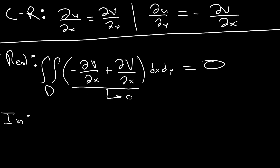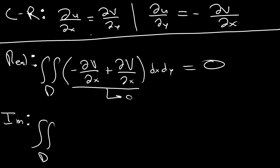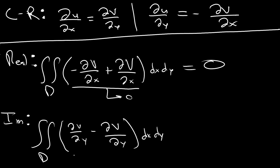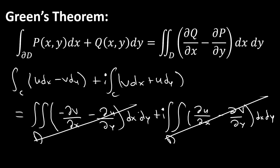How about the imaginary part? Again we take the double integral over our domain. We can see we have ∂u/∂x minus ∂v/∂y. Using the first Cauchy-Riemann equation, ∂u/∂x = ∂v/∂y, so we get ∂v/∂y minus ∂v/∂y, which is zero. The imaginary part is zero as well. Going back to the original expression, the real term drops to zero, the imaginary term drops to zero, and the entire integral equals zero — we've just confirmed the Cauchy-Goursat theorem.